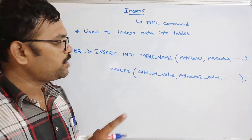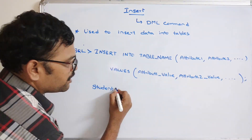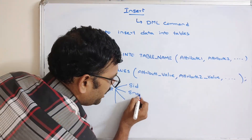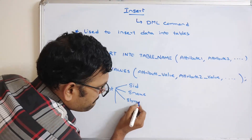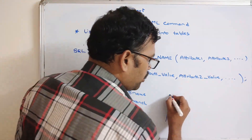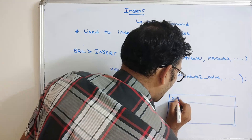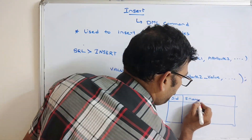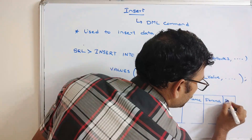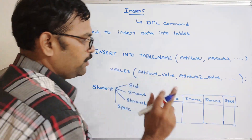For example, we created a student table in the previous session with four attributes: student ID, student name, student branch, and student percentage. We need to provide data for all or selected attributes.